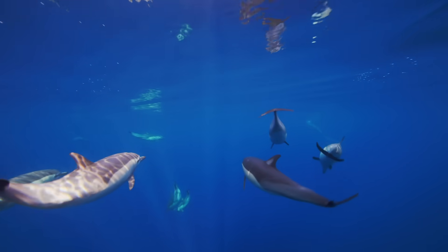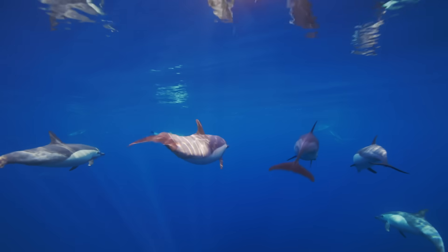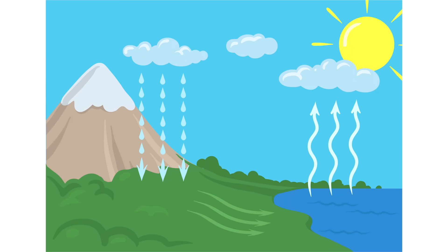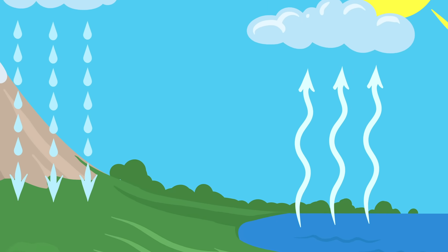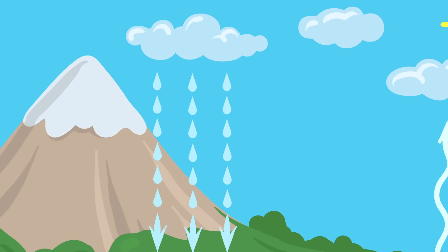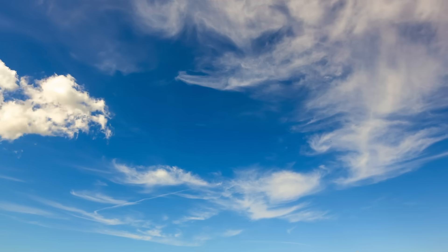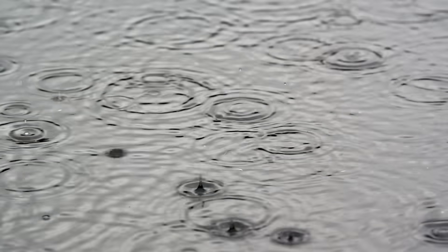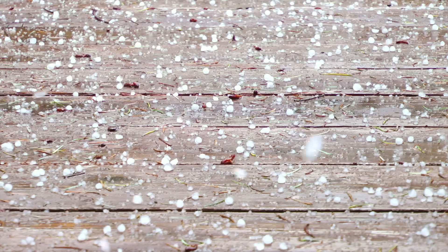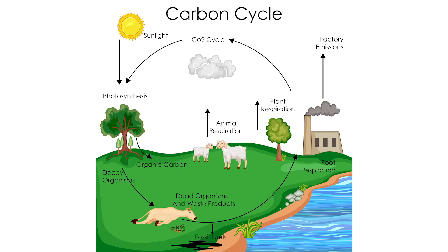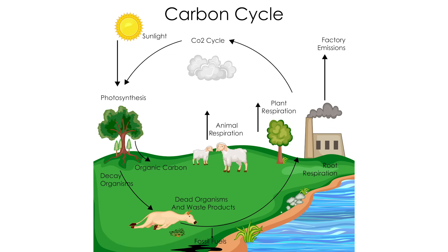All living things and non-living things depend on each other for survival. There are three cycles that exist in ecosystems. The first is the water cycle. There is a continuous movement of water between the earth's surface and the air. Liquid is changed to a gas when it evaporates, and then that gas is changed back to a liquid through condensation. When water falls from the atmosphere as rain, snow, sleet, or hail, it is called precipitation.